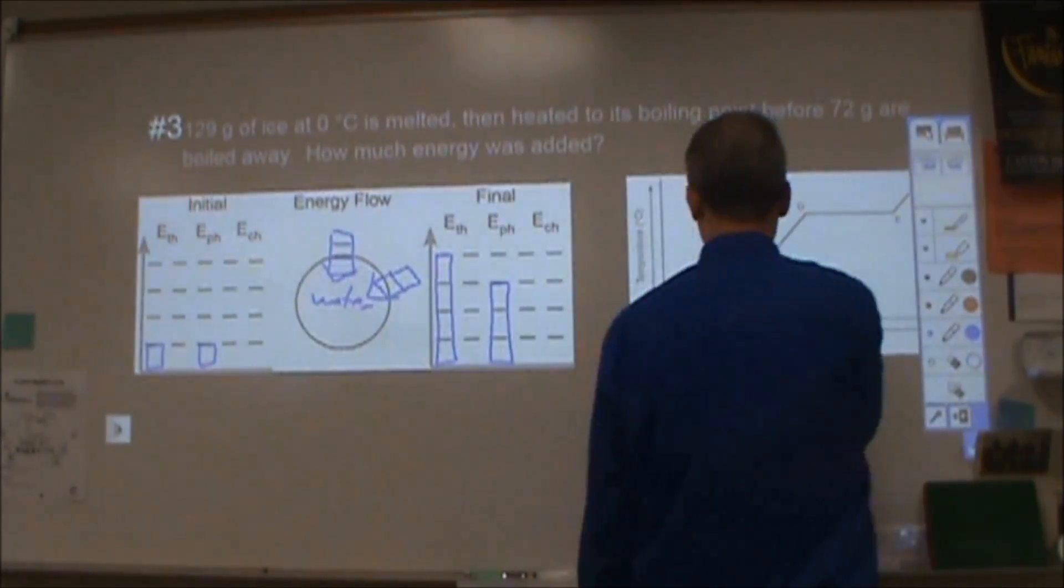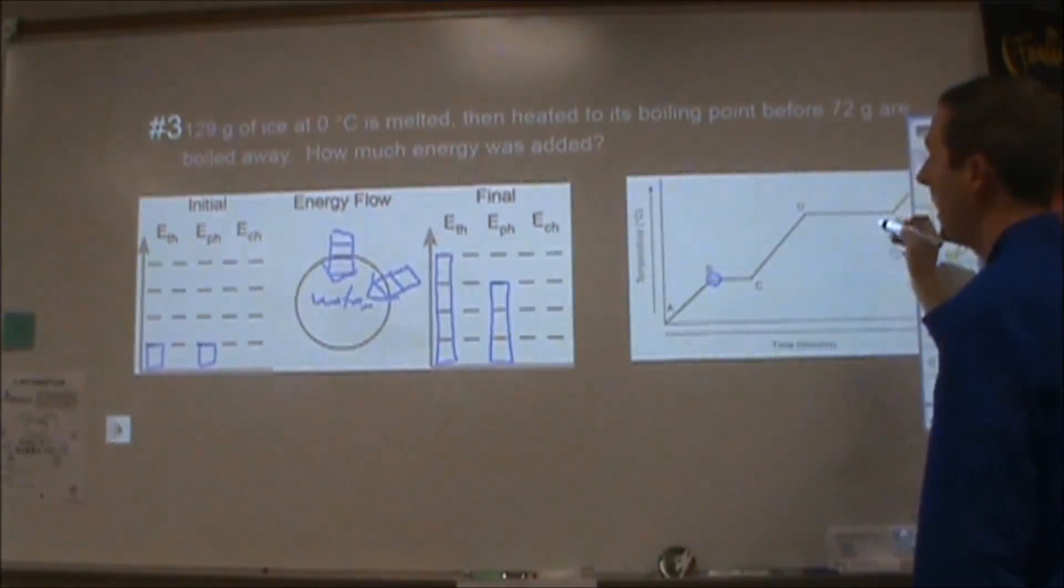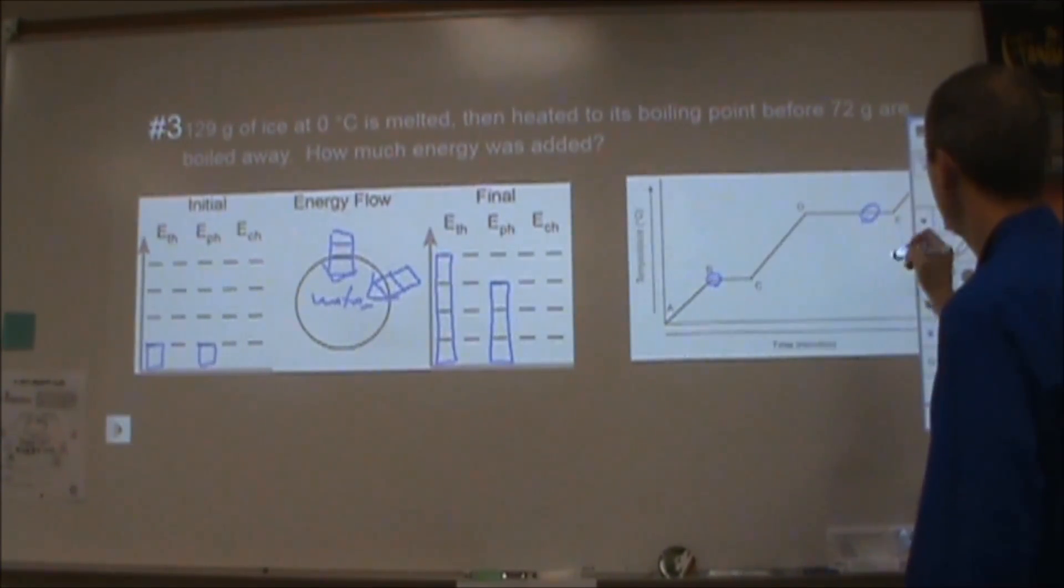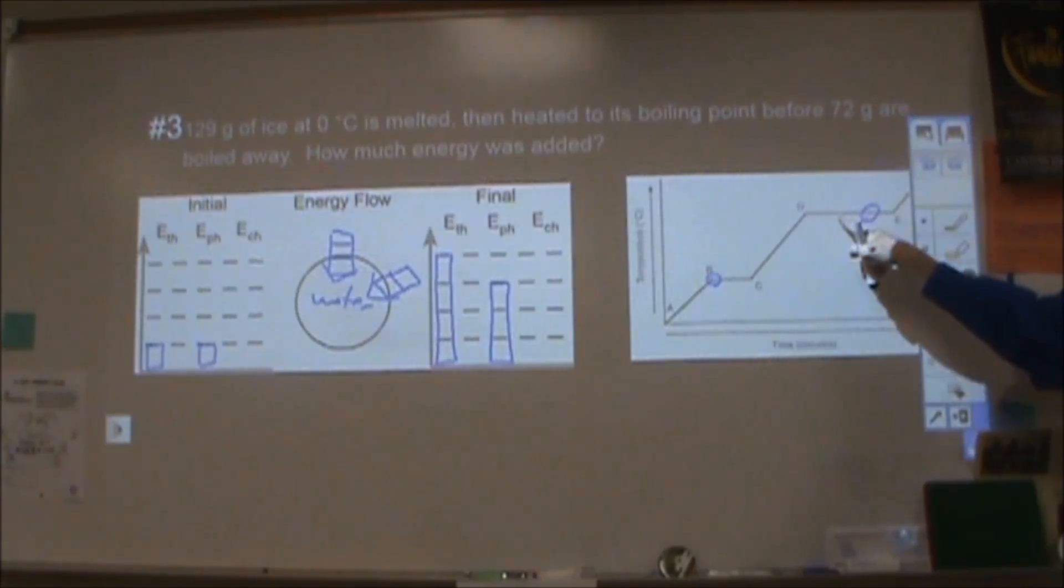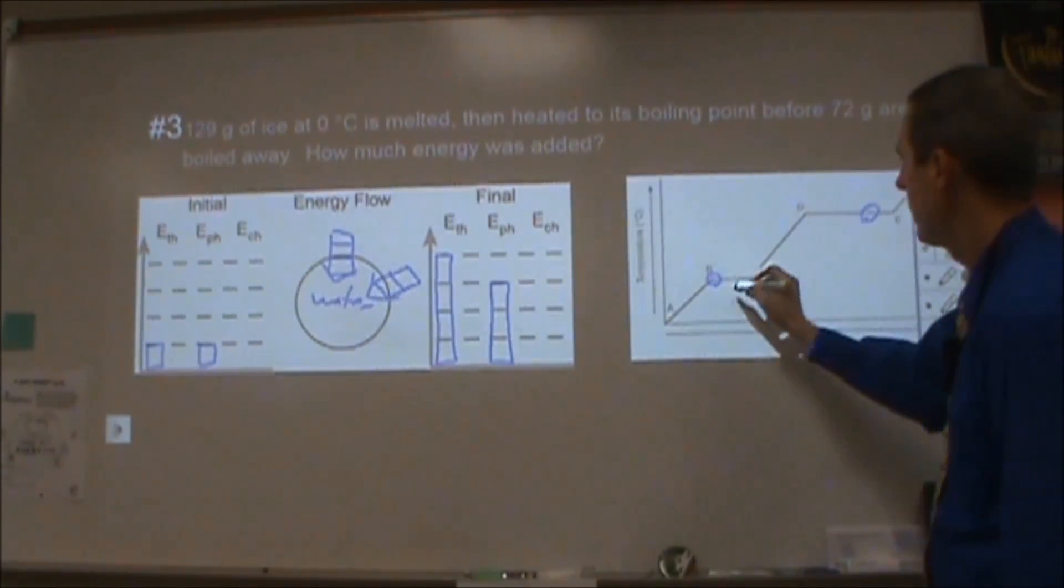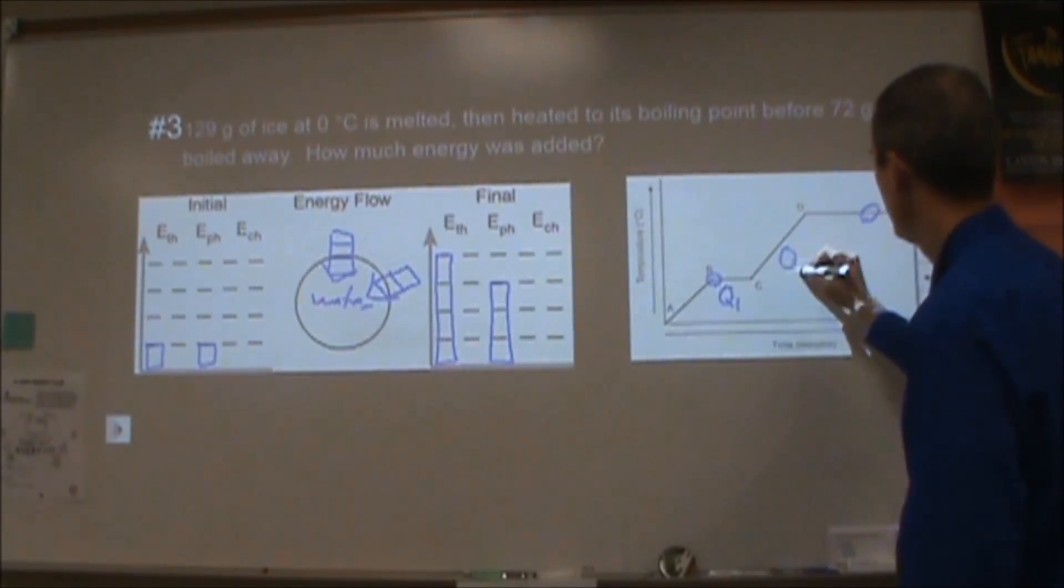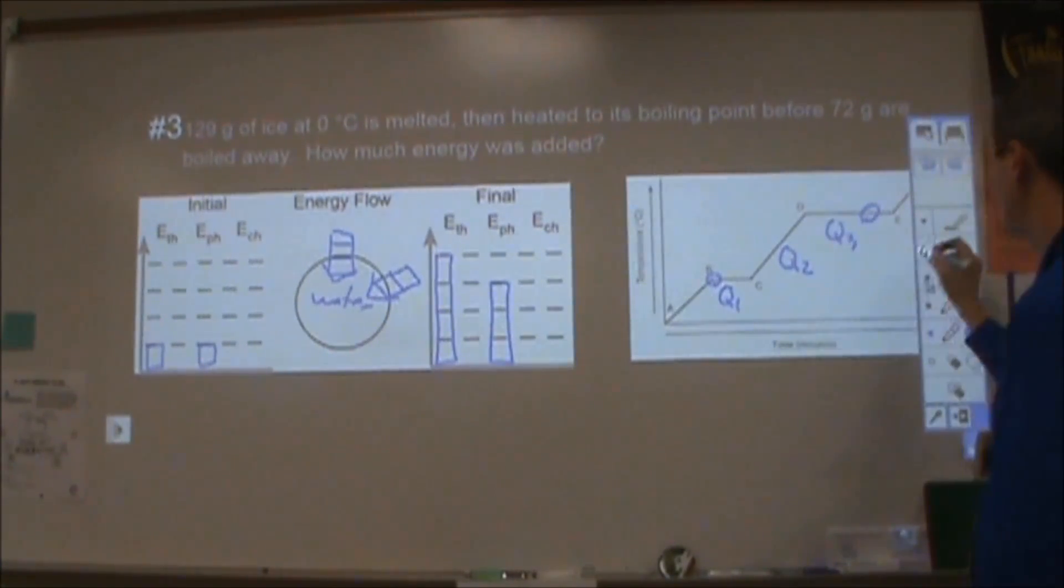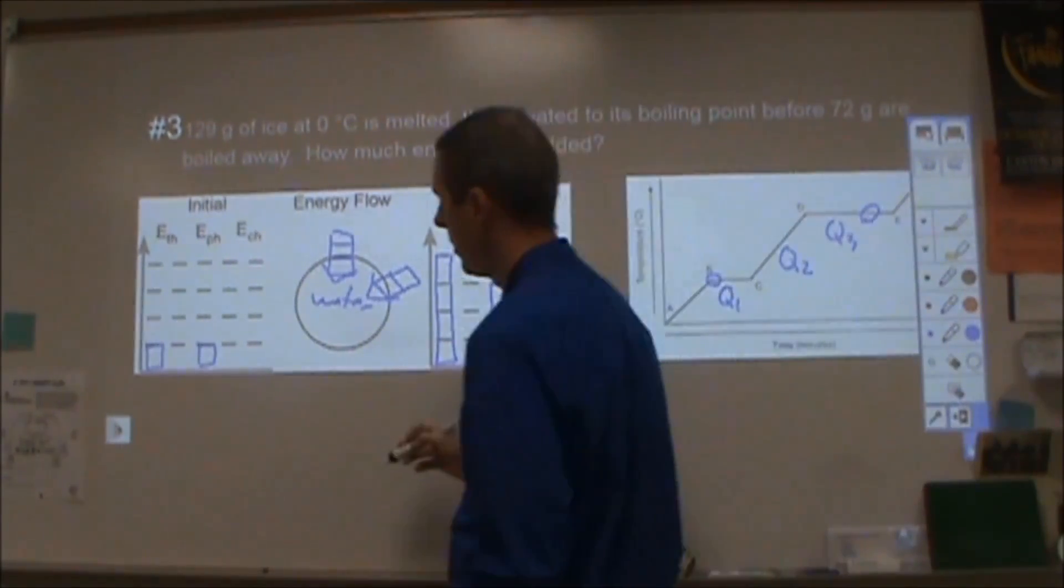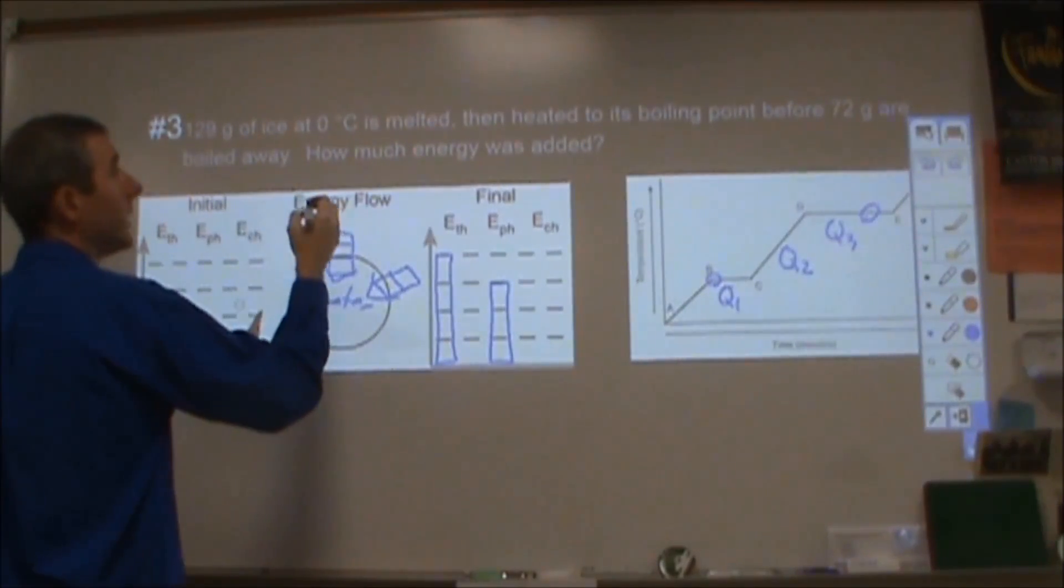On my heating curve, I'm starting here at point B and I'm ending where 72 out of 129, so I'm ending somewhere in here where I've boiled away some of my water but not all of it. So I'm going to have Q1, Q2, and Q3 on this. Then I'm going to need to add all of them together.